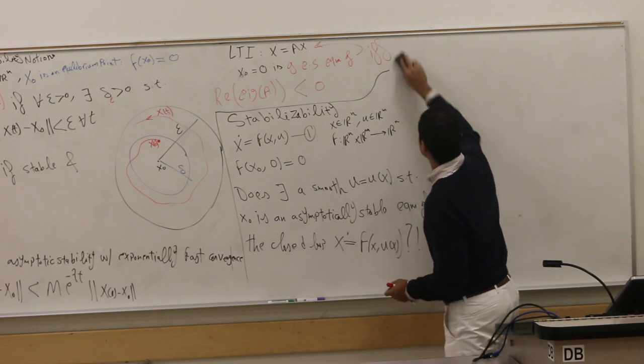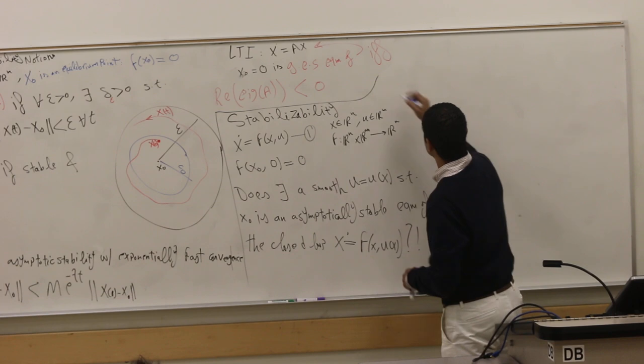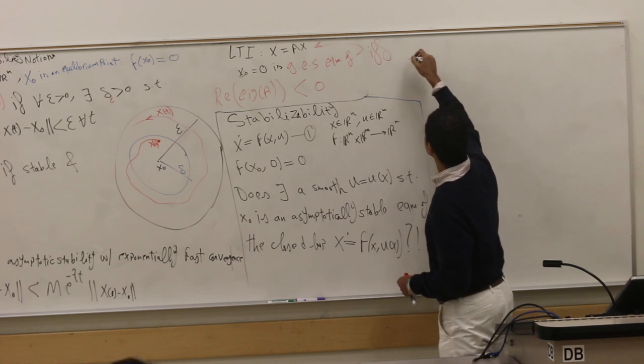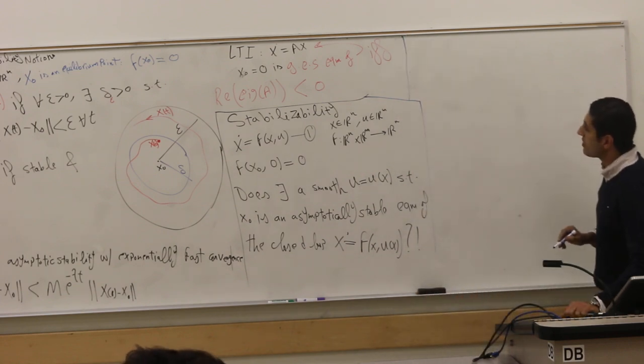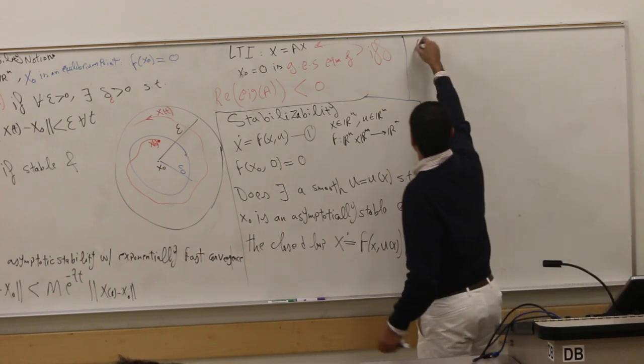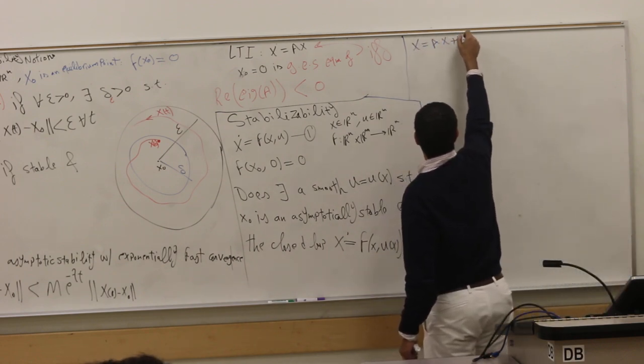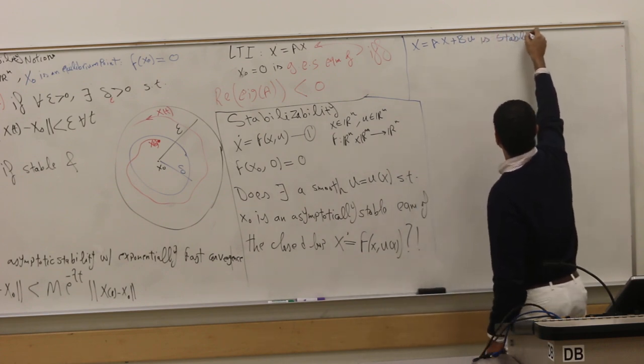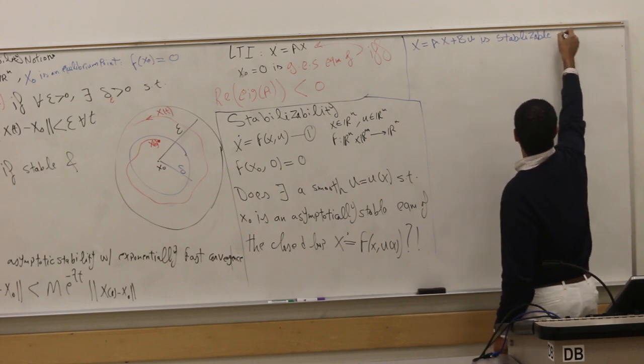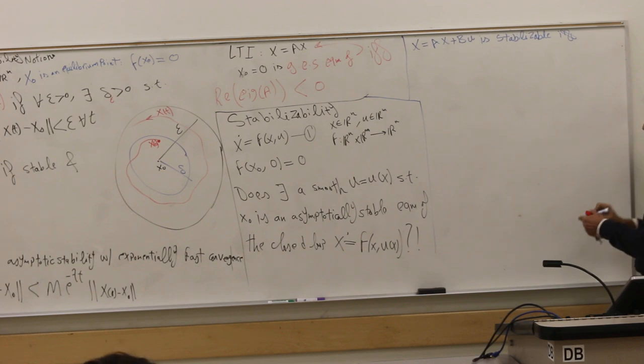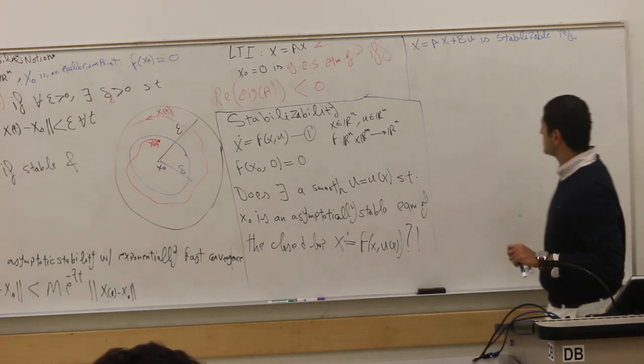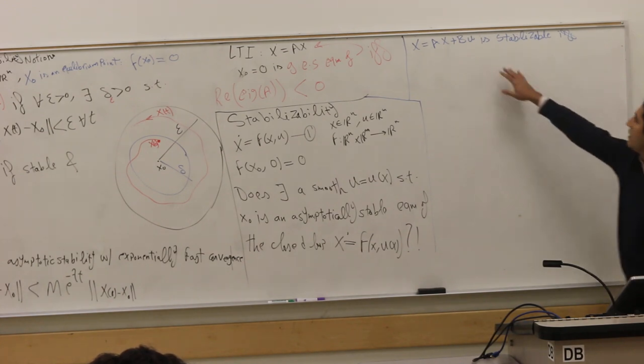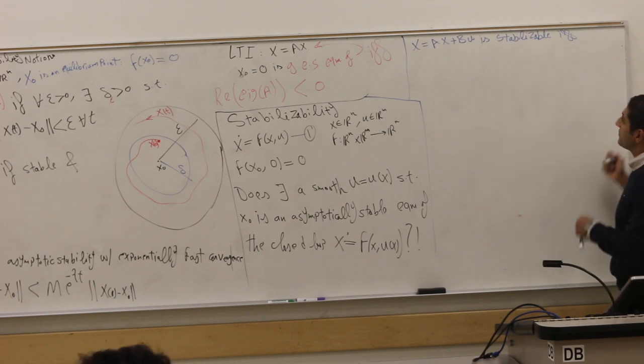So again, for LTI system, carry over here. This guy, x dot equals Ax plus Bu, is stabilizable around the origin, and any equilibrium. So one of the characteristics of the linear system is that all equilibria have the same characteristics. So, okay, this guy is stabilizable if and only if, what? Anybody remembers?